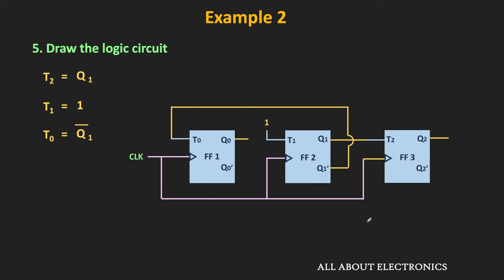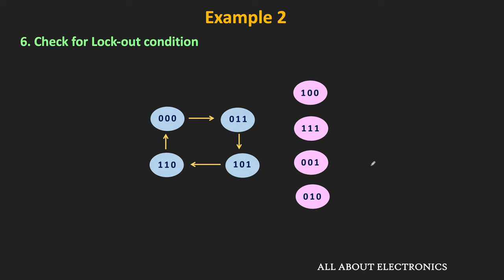The next step is to draw the logic circuit. In this circuit, Q1' is connected to the T0 input, T1 is connected to logic 1, and Q1 is directly connected to the T2 input. Once we have the logic circuit, we need to check for the lockout condition.